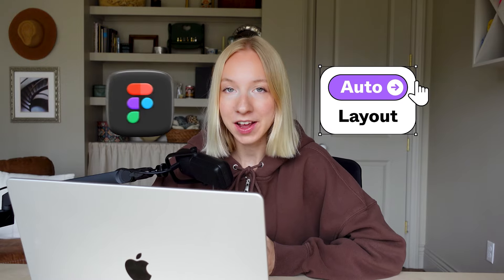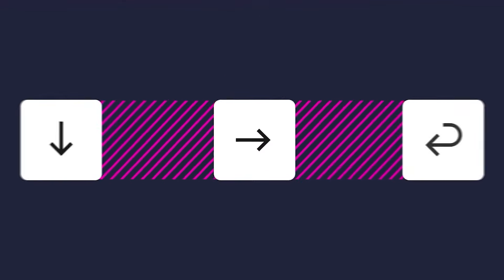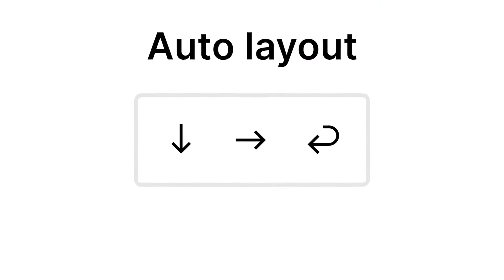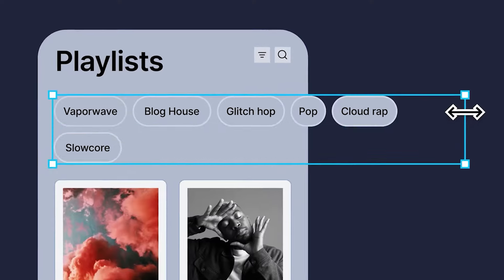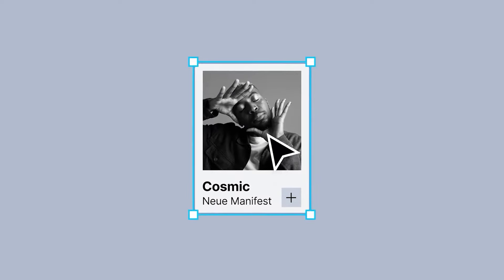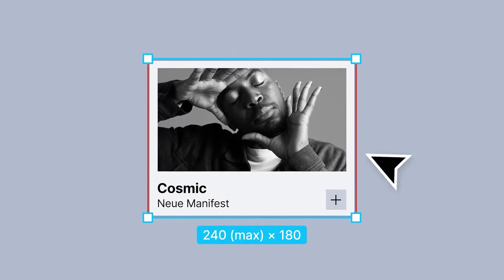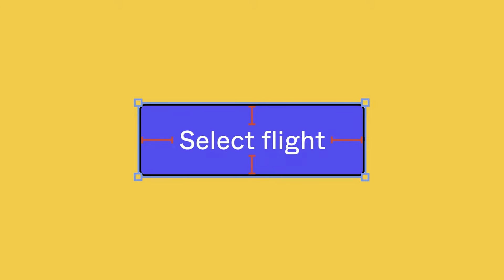If you're not using Auto Layout in Figma, you're missing out on a huge time saver. There's a reason why professional designers use Auto Layout — it keeps designs consistent, files clean, and saves a ton of time. It basically mirrors what CSS Flexbox can do in code. It allows you to align and distribute objects within a frame and define layout direction, padding, and the gaps between elements. This especially becomes crucial when you're designing something responsive or something that should grow and shrink as your screen size changes.